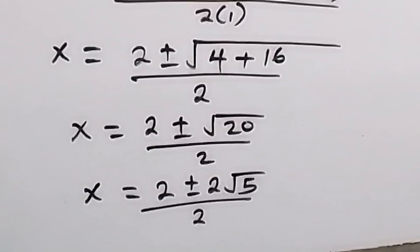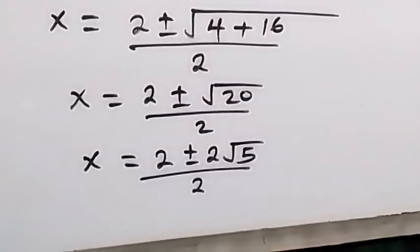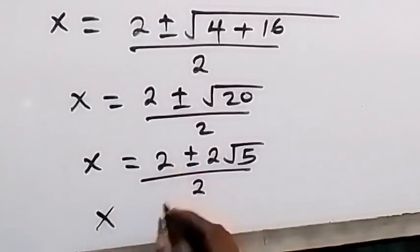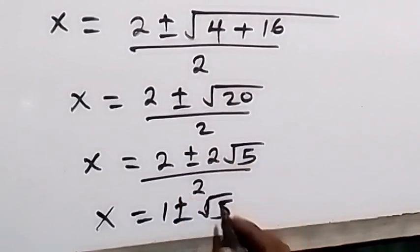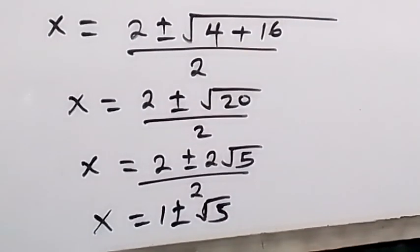So we have 2 plus or minus 2 root 5, then divided by 2. And when we divide this by 2, this will reduce to x equals to 1 plus or minus root 5.